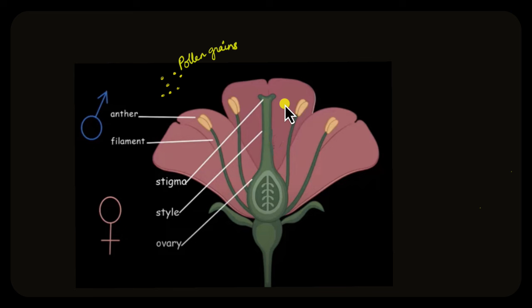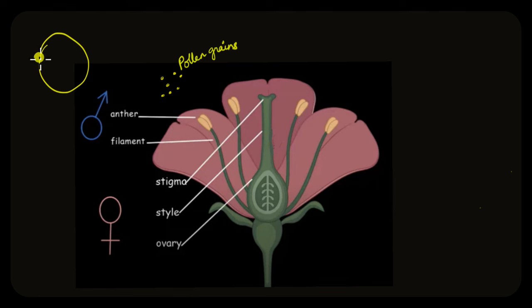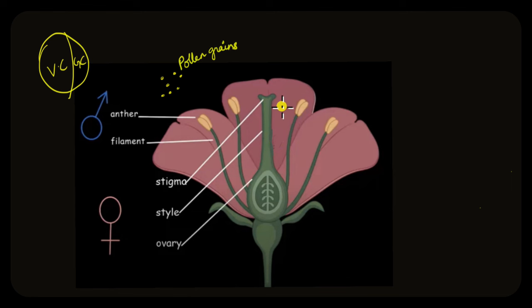As part of the male reproductive structure, the anther produces pollen grains, which contain a larger vegetative cell and a smaller generative cell. When the anther bursts open, the pollen grains are released and land on the stigma part of the female reproductive structure.